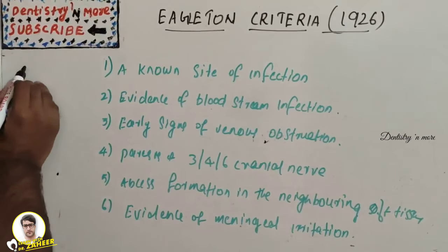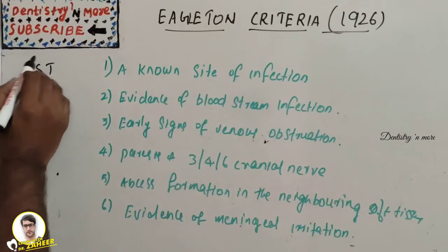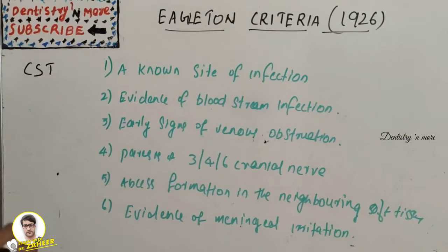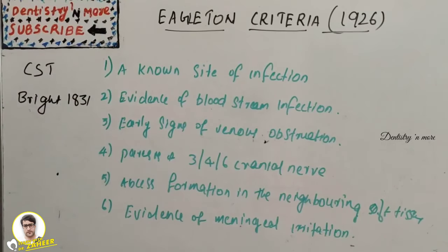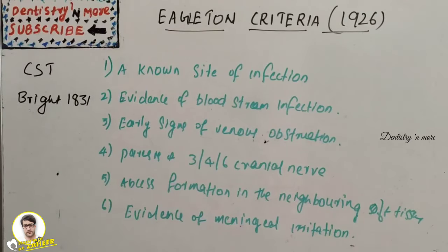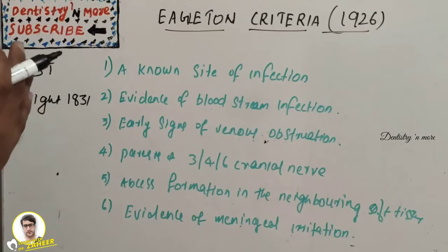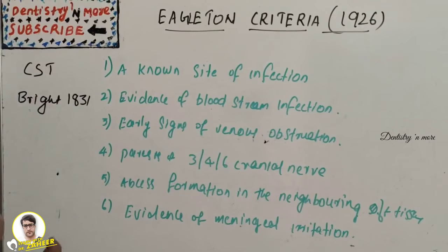Cavernous sinus thrombosis, or CST, was first described by Bright in 1831. It is a complication of epidural and subdural contamination. Since it has a very intricate neurovascular anatomic relationship, CST is the most complicated type of intracranial septic thrombosis.